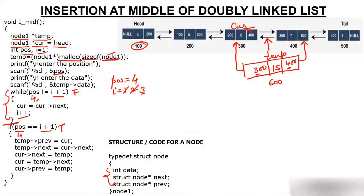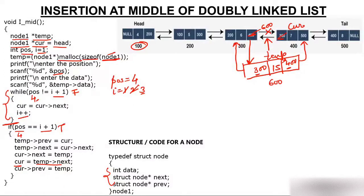Now we update current: current->next is set to temp, which is address 600, so the node at 300 now points forward to the new node at 600 — the old link to 400 gets broken. Then current advances to temp->next, which is 400, so current moves to the node at 400. Finally, current->previous is set to temp (600), so the node at 400 now points back to the new node at 600 — that back link also gets updated.